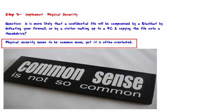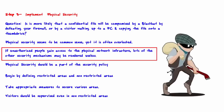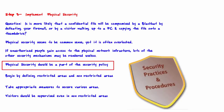Physical security may seem to be common sense, yet it is often overlooked. If unauthorized people gain access to the physical network infrastructure, lots of other security mechanisms may be rendered useless. Physical access suggests at least the possibility of bypassing other security mechanisms. Physical security should be made part of your security policy.